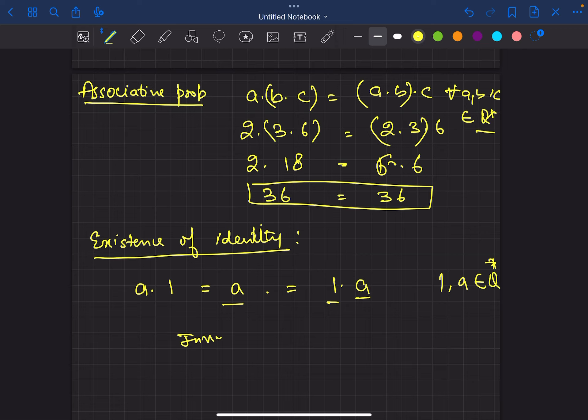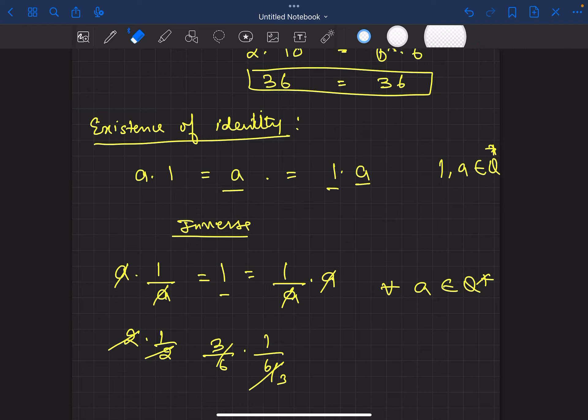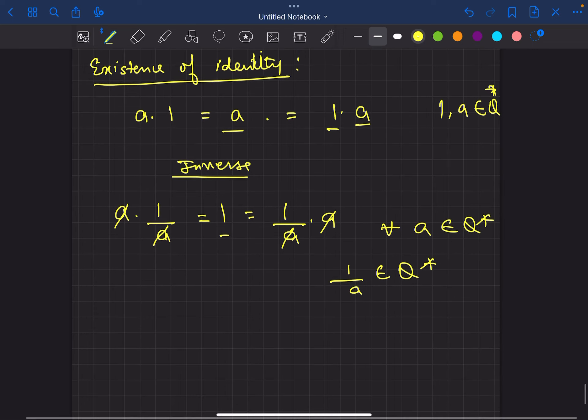Next is existence of inverse. Inverse, what happens? If A is multiplied by 1 by A, then my answer is identity, which is 1. For all A that belongs to Q*, it can be anything. If this is 2, then 1 by 2. Here, 3 by 6, and this is 6 by 3, it will give answer 1. So 1 by A belongs to this set. Existence of inverse.